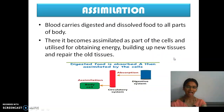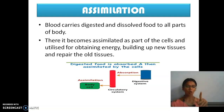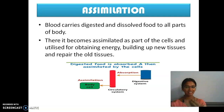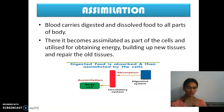After that, assimilation. In assimilation, the digested food is absorbed by the blood and circulated to all the body parts. That energy is absorbed by the cells, which then utilize it for various purposes such as giving us energy to do work, building up new tissues, growing, and healing of injuries.